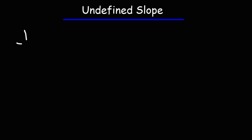So when is the slope undefined, and what does it mean for something to be undefined? Whenever you have a fraction, if you have a zero in the denominator of that fraction, this value is undefined. We don't know what this is — is it a number like five, is it infinity, is it zero? We can't define it.